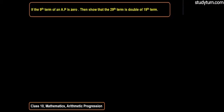Hello students, today we will solve a problem from Class 10 Mathematics, chapter Arithmetic Progression. We have a question: if the 9th term of an AP is zero, then show that the 29th term is double the 19th term.